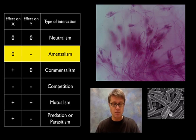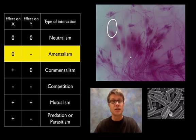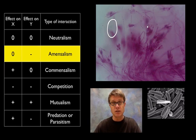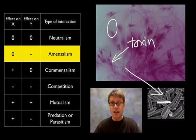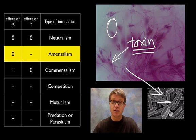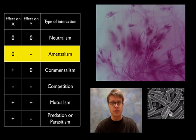Next is amensalism, which occurs when one organism is not affected by the other, and the other is negatively affected. This is penicillium, a type of fungus that constantly produces a toxin that kills bacteria. The bacteria is negatively impacted, while the penicillium doesn't even know the bacteria is there. We call this amensalism: one organism gains nothing from the reaction while the other is negatively affected.